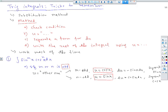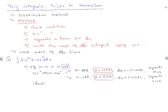The identities we use are: sin²θ = 1 − cos²θ, and cos²θ = 1 − sin²θ, applied depending on what you need in the integral.